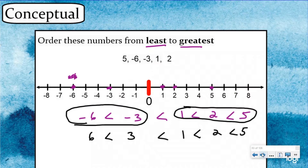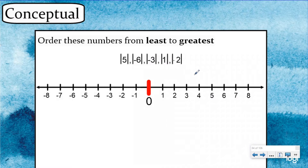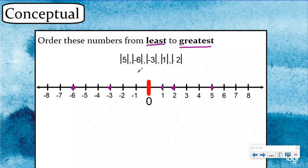Let's take a look at this visually. We have the exact same integers as before, still going from least to greatest, except we're going to be looking at the absolute value of them. So I'm still going to put them where they should be — positive five, negative six, negative three, one, and two. But if we're comparing the absolute value, we're comparing their distance away from zero, not how much they're worth. I'm going to do this visually with arrows so you can see what we're doing.